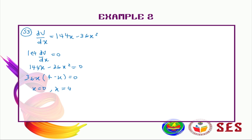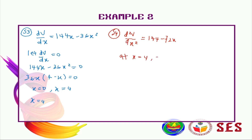So x equals 4. For the fourth step, we verify using the second derivative test. The second derivative d²V/dx² evaluated at x equals 4 gives a negative number, which confirms that x equals 4 corresponds to a maximum.